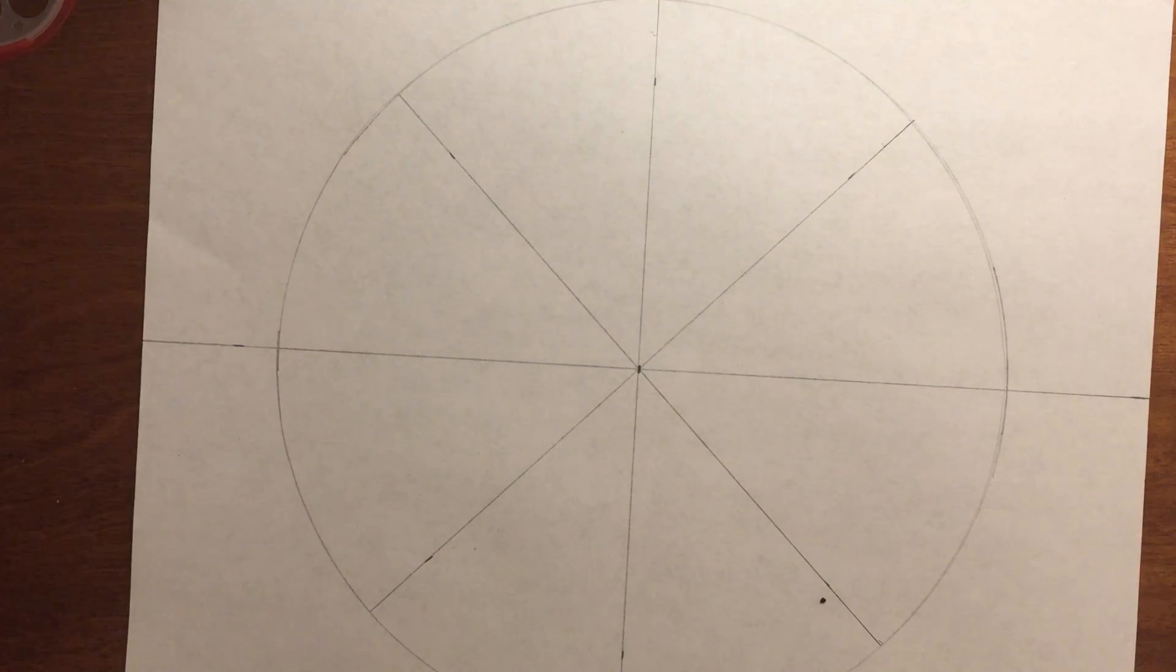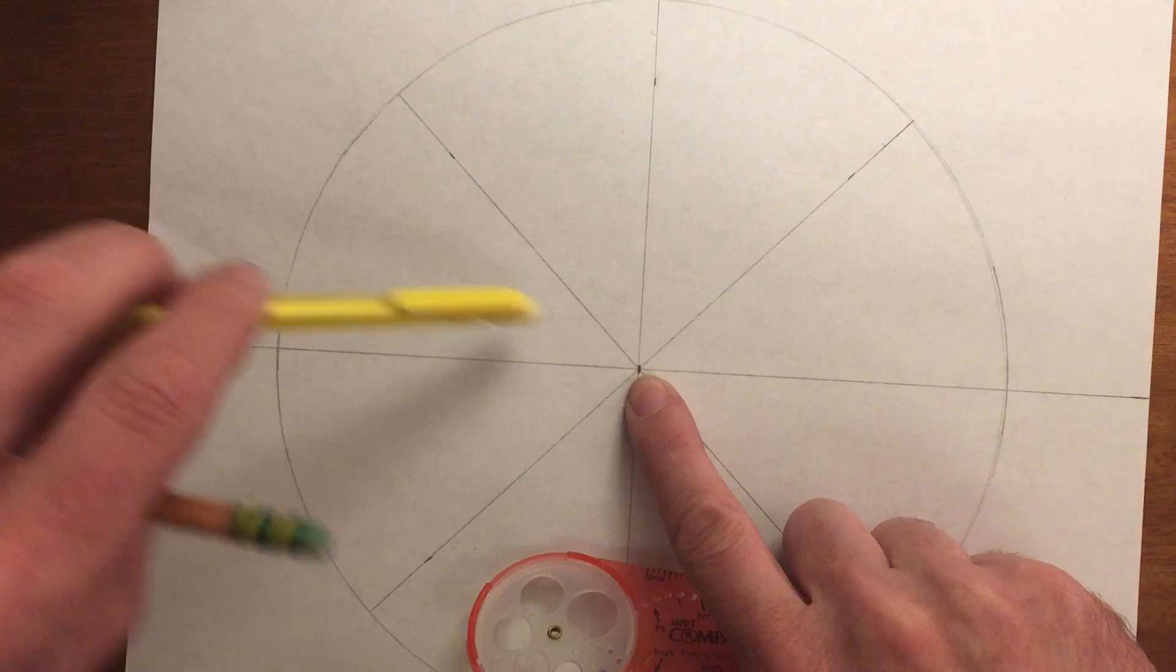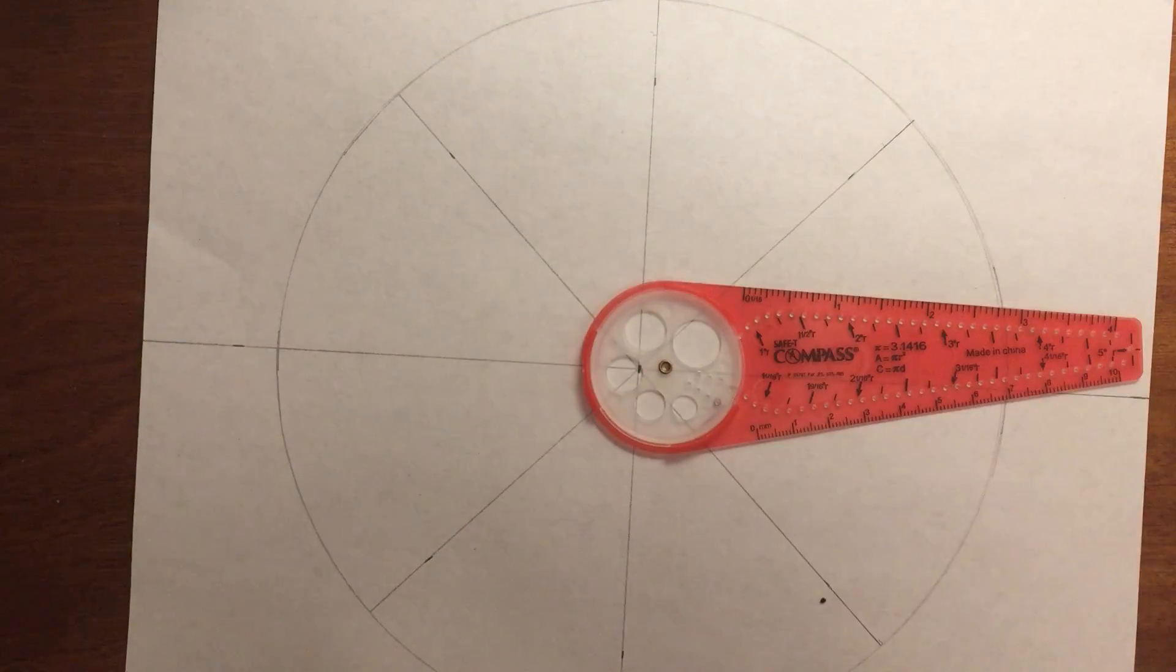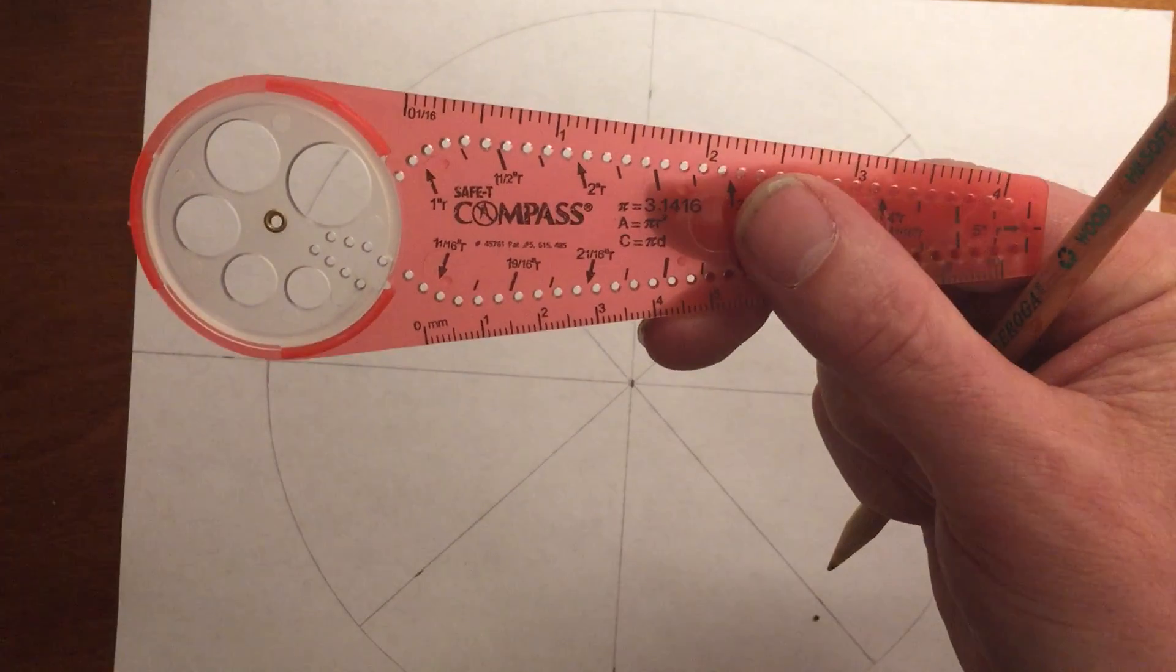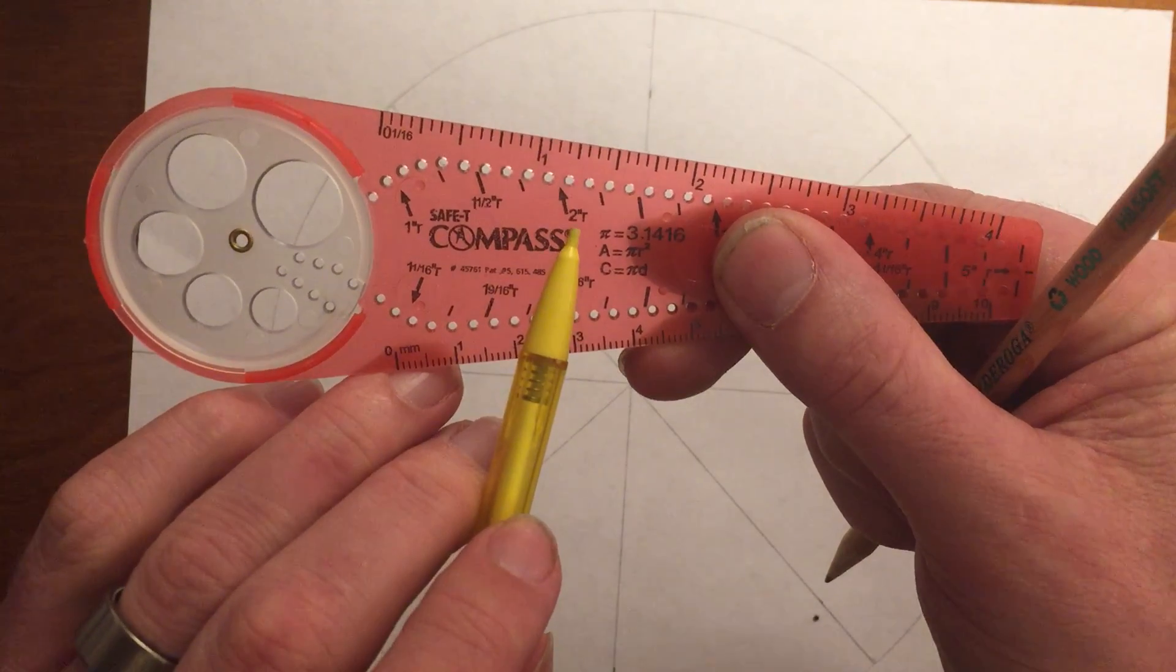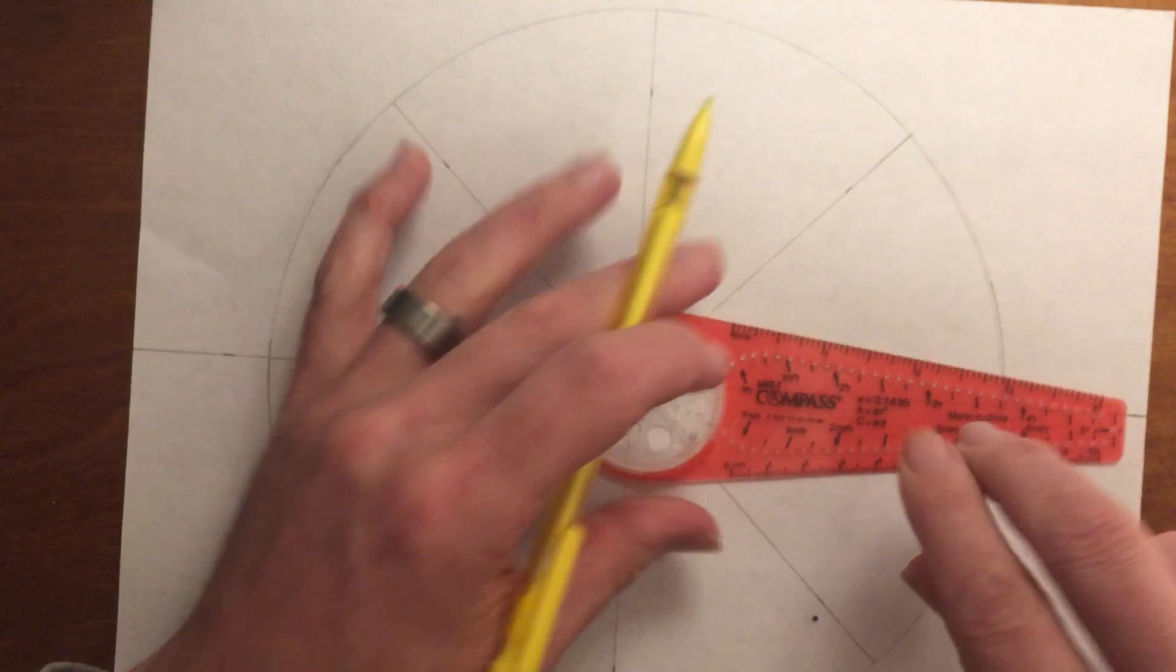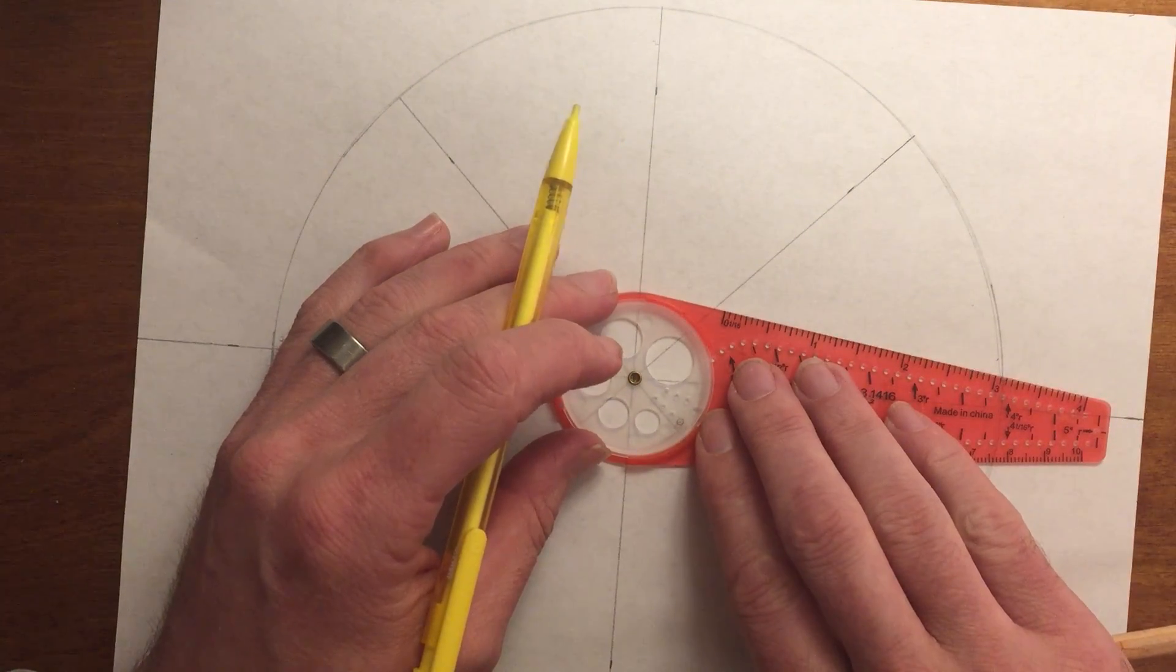What we're going to do first is create another circle centered on the same center of this circle. This circle is going to have a radius of two inches. There's my two-inch radius.